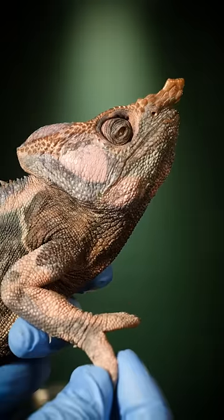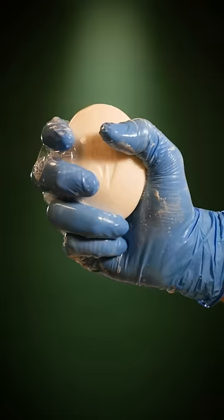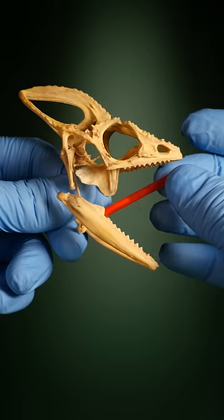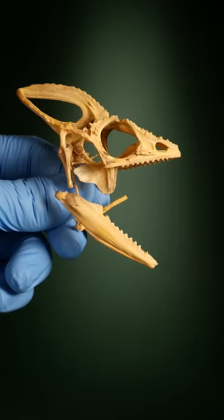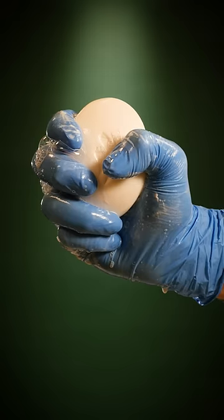When the chameleon wants to shoot its tongue, it squeezes those muscles. This shoots the bone forward, which launches the tongue wrapped around it. So chameleons spit out their tongue by squeezing a bone in their mouth, like a hand squeezing a bar of soap.